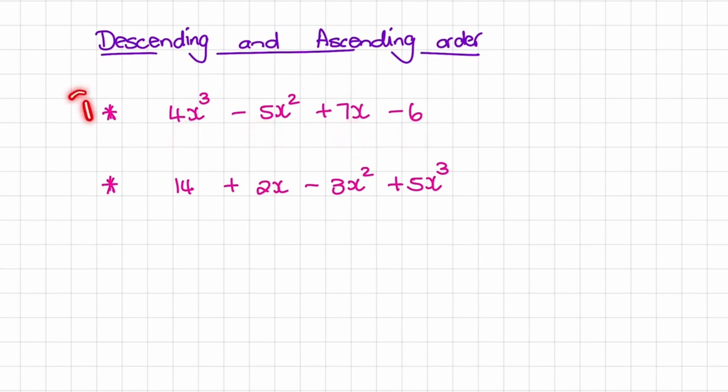So in our first example, we can see that we have 1, 2, 3, 4 terms. And that's the same in our second example.